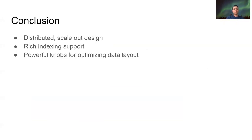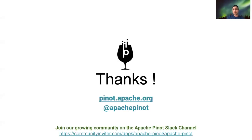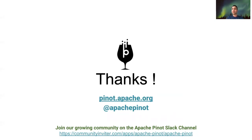To wrap up, in this talk we saw the high-level architecture and the scale-out design of Pinot. We looked at the segment architecture and the rich indexing support, which helps in getting low latency in addition to high throughput. And we also saw some powerful knobs that Pinot provides to optimize data layout and therefore get more predictable latency. If you want to know more, please visit our official page at pinot.apache.org. We also have an official Twitter handle and a Slack channel where you can find us and get questions answered. Thanks a lot for having me and I look forward to the Q&A.